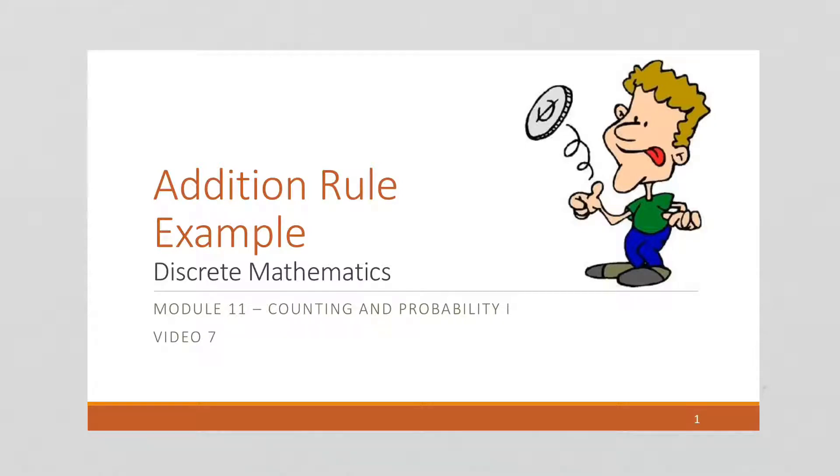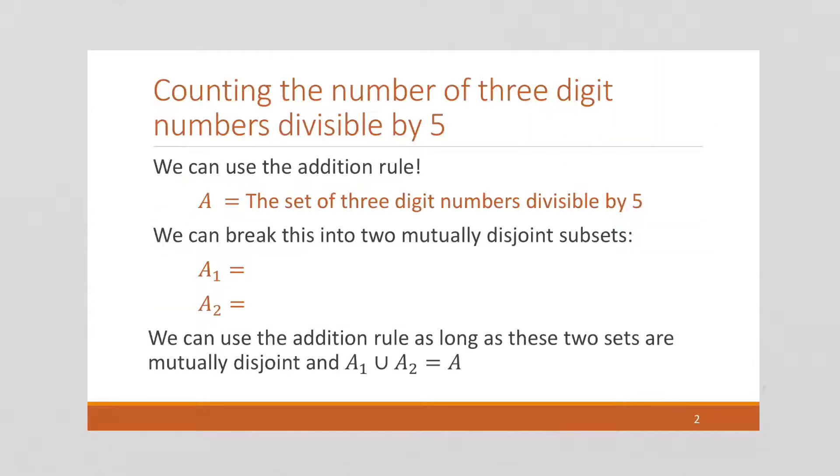In this video, we're going to do another example of the addition rule. Here we count the number of three-digit numbers that are divisible by 5. So we have everything between 100 and 999. Those are the three-digit numbers. We can go from 100 to 999. How many of them are divisible by 5?